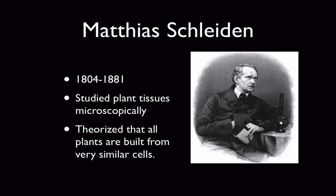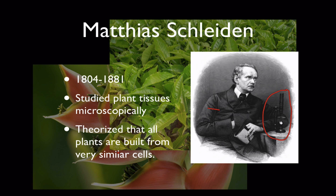The first scientist we're going to learn about is Matthias Schleiden. He was German, living from 1804 to 1881, so his life pretty much spanned the 19th century. He studied plant tissues using the new microscopes, which were being made better and better every single year. He looked at all sorts of different types of plants and theorized that all plants are built from very similar cells.